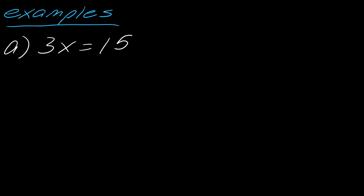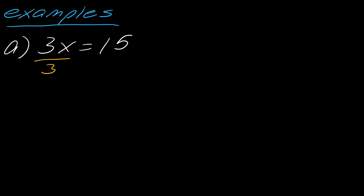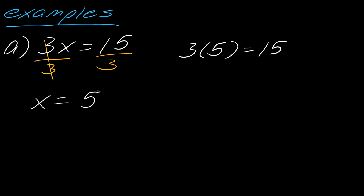Here's the multiplication principle in action: 3x equals 15. This is different from before — now x is being multiplied. Since division and multiplication go hand in hand, I divide by 3 on each side. The 3's cancel out, leaving x equals 15 divided by 3, which is 5. Check: 3 times 5 is indeed 15.